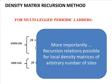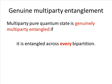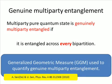A multiparty pure quantum state is said to be genuinely multiparty entangled if it is entangled across every partition of the system into two parts. To measure the content of genuine multi-site entanglement, we use the generalized geometric measure, or the GGM.